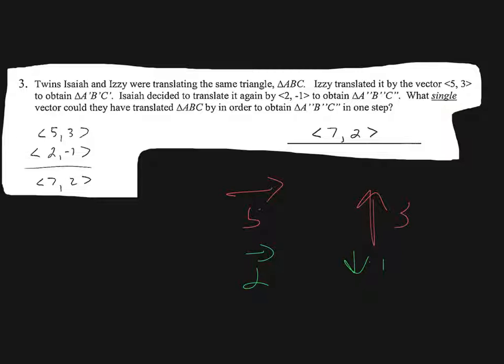So it says, what single vector would they have been able to do to do this in one step? Well, if you go 5 right, 2 right, I guess you went 7 right. And if you went up 3 and then down 1, then I guess you just went up 2 overall. So our final answer is a vector of 7, 2.